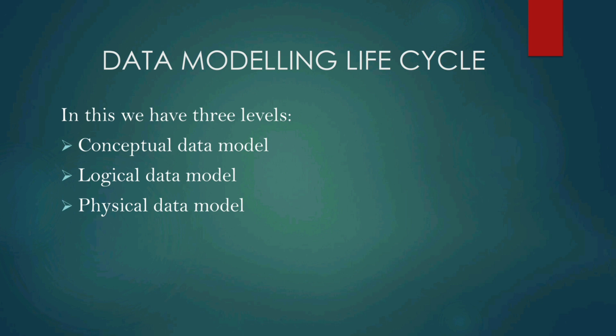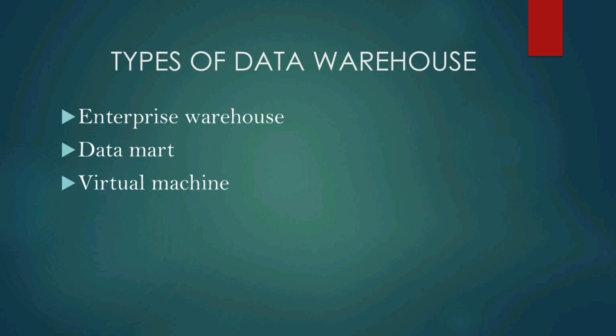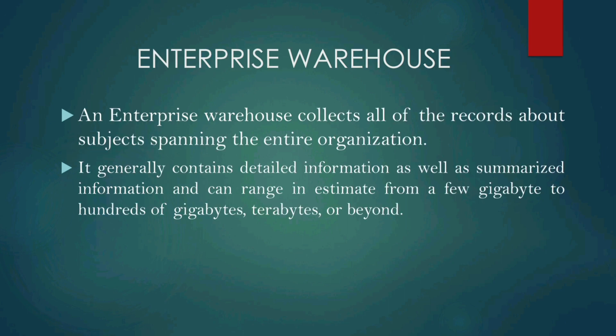The next topic is types of data warehouse: enterprise warehouse, data mart, and virtual machine. Enterprise warehouse contains all the information about the subject for the entire organization. It contains both detailed and summarized information. We can implement the enterprise warehouse in mainframes and super servers and stores up to gigabytes and terabytes.